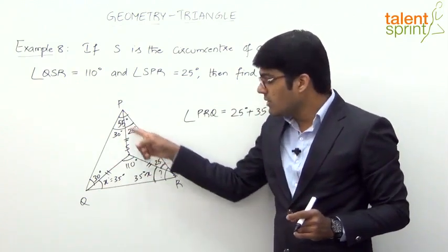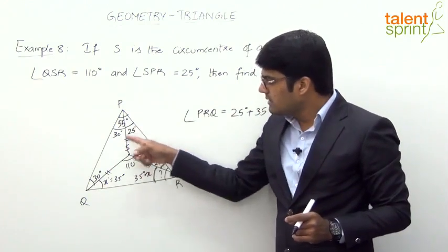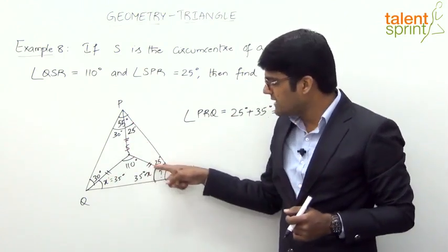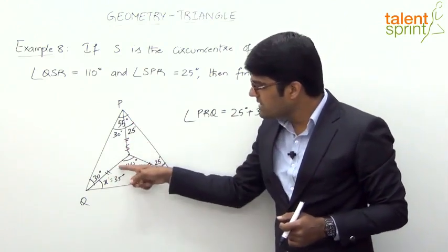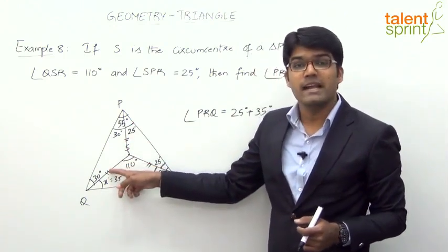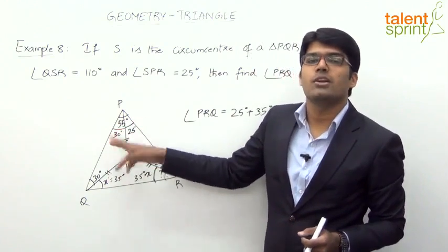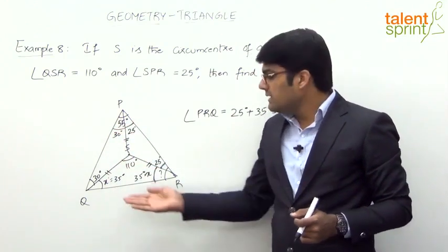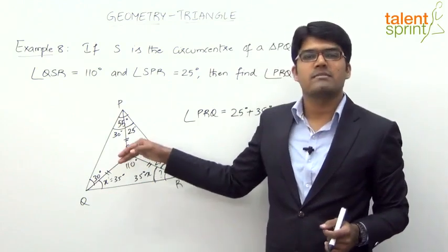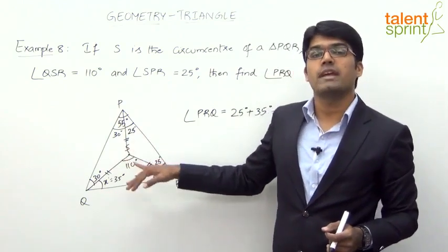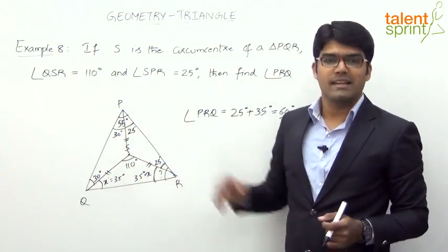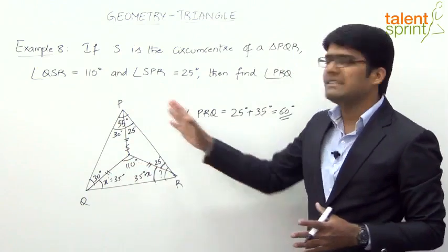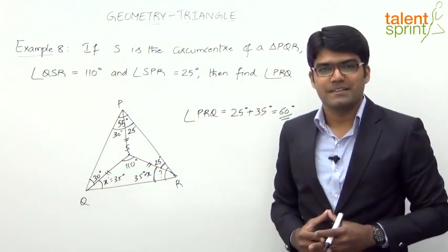Important points: the circumcenter is equidistant from all three vertices. So the three triangles formed are all isosceles triangles — these two sides are equal, these two sides are equal, and these two sides are equal. Based on that, the opposite angles are equal. And most importantly, the angle made by any side at the circumcenter is two times the vertical angle. Using these properties, you can solve any question based on circumcenter.